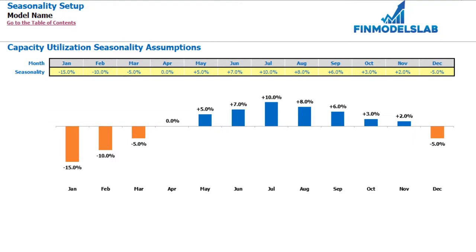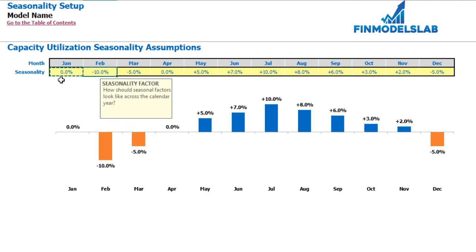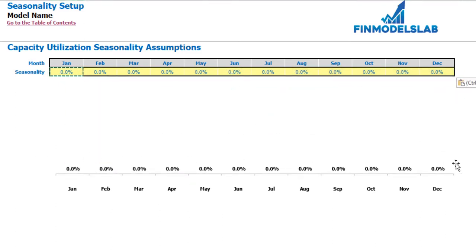On the seasonality tab you can set up your capacity utilization seasonality assumptions across the months. The dashboard previously set up the average capacity utilization by years, and here you can adjust it for different months. For example, minus 10% means that if you have 50% average capacity utilization across the year, you multiply 50% by 0.9 and get 45% for February. Conversely, plus 10% in July gives 55%. If you don't need any seasonality, just put 0 across all months for a flat rate.